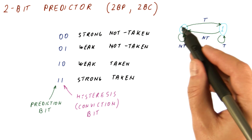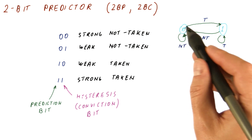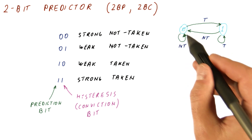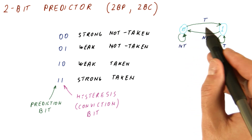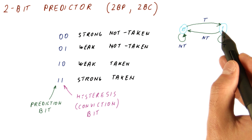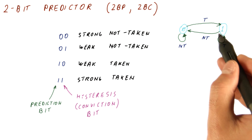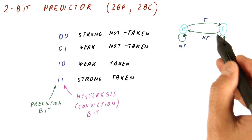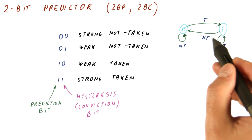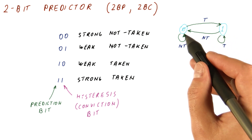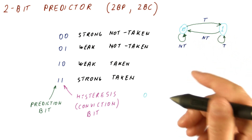Let's say the dominant behavior is not taken. The first time the branch is seen to be taken, we move to the taken state. Then the branch moves back to the dominant behavior, so we will predict taken and mispredict again before moving back.